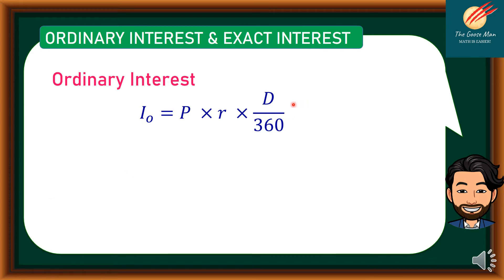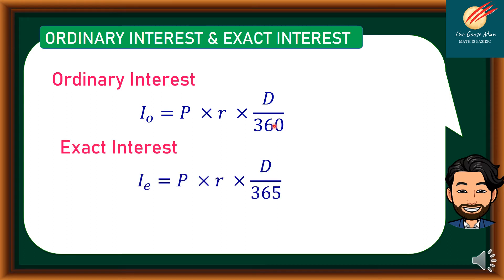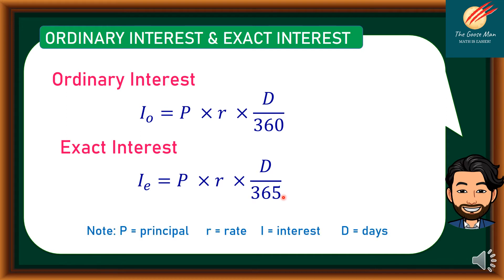Where D is the number of days. For Exact Interest, I sub E is equal to Principal times Rate times the number of days over 365. Let's recall that P is the Principal, R is the Rate, I is the Interest, and D is equal to Days.